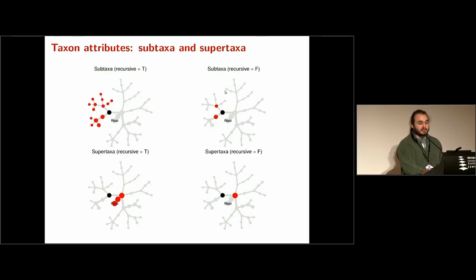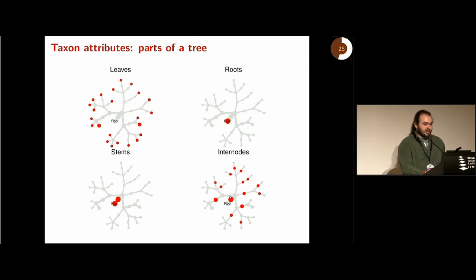Same concept for supertaxa - you might get all of them up to the roots. All the red ones here are supertaxa of that black taxon. And here you only have the immediate supertaxa. You can also talk about different parts of the tree. Leaves and roots are kind of intuitive. We also define stems and internodes. A stem here is anything before the first split. Internodes are things that have a single supertaxon and a single subtaxon. These are actually useful to identify because you can remove them from the tree and you won't lose any information about the relative relationship of the remaining taxa. So if you want to prune a tree, you can filter those out.